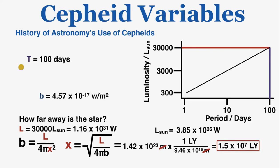This ability to measure the exact distance to any variable star allowed astronomers to build a much more detailed map of the universe. Since variable stars are clustered in galaxies, scientists were able to understand the shape of the Milky Way, the shape of other galaxies, and the vast distances between galaxies. The pattern of Cepheid variables that Leavitt observed is what made all of this possible.